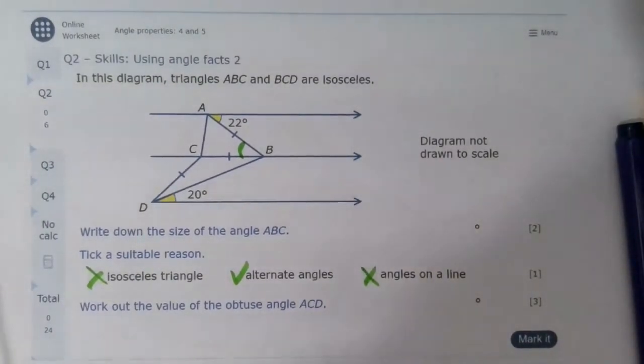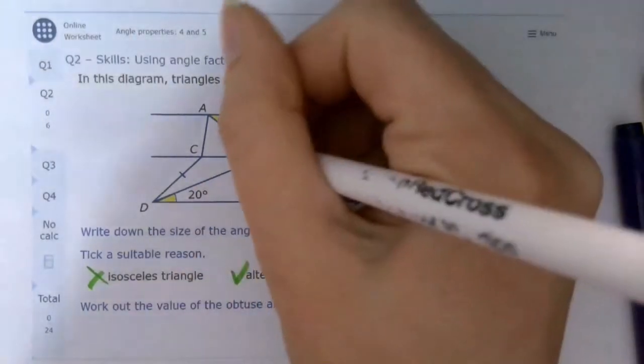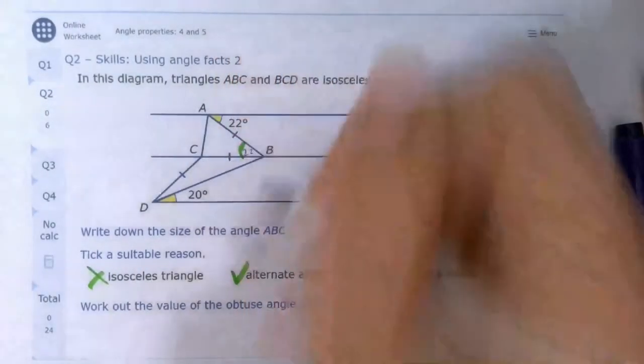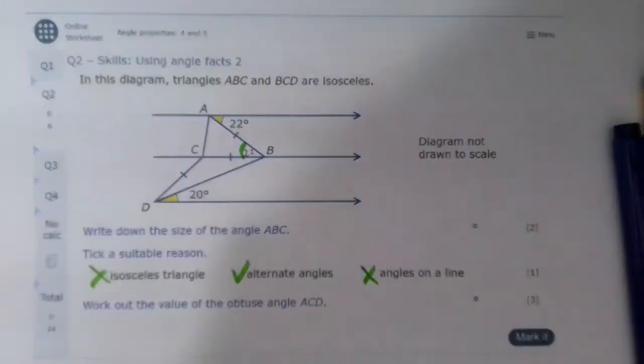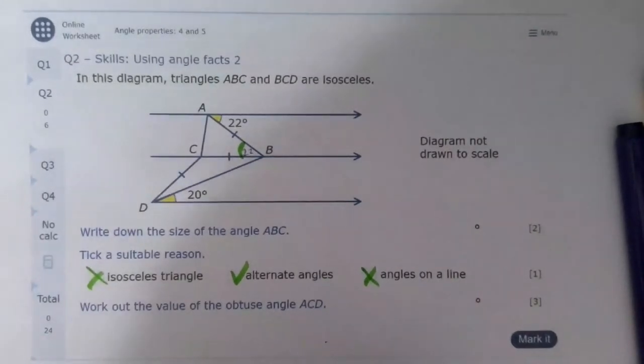Work out the value of the obtuse angle ACD. At this point, what I would do is I would just work out as many of the angles as I can. So I know that this would be 22. All the angles in that triangle must add up to 180, so that means that those two must add up to 158, which means that they would be 79 each.